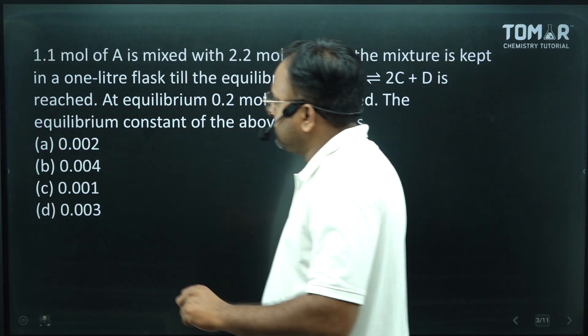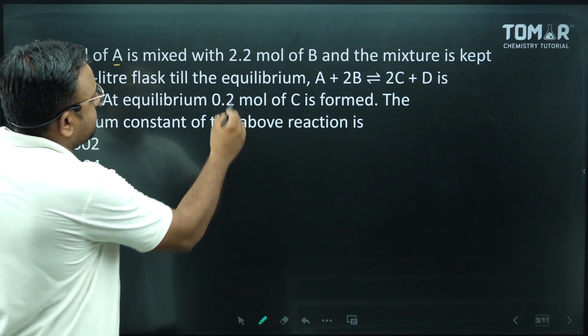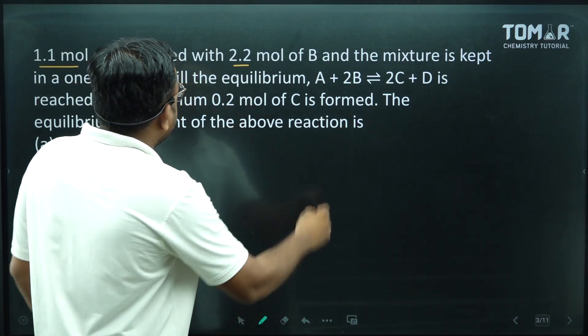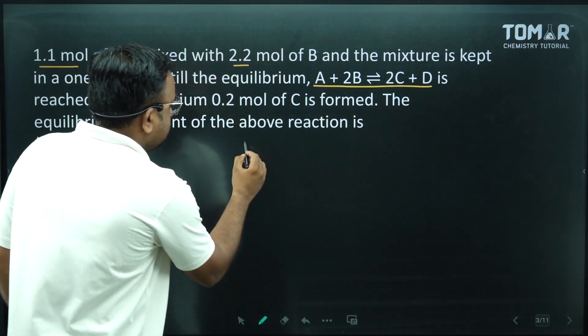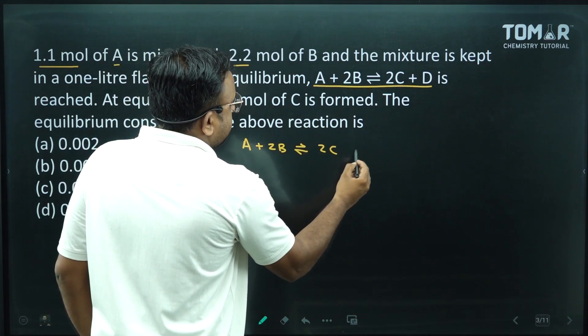Next question. 1.1 mol of A is mixed with 2.2 mol of B and this reaction is given. Let's write it again: A + 2B = 2C + D.